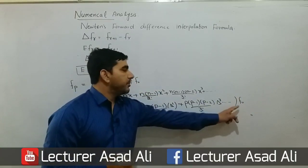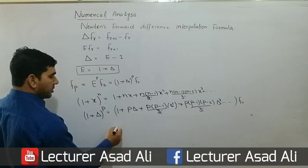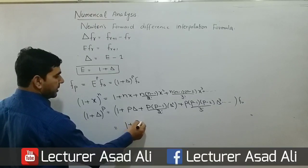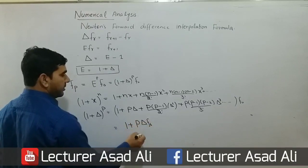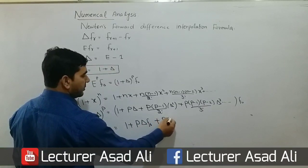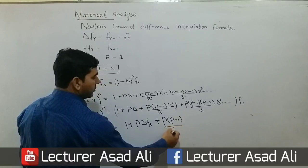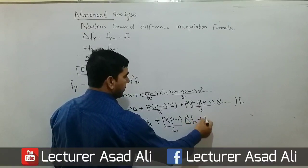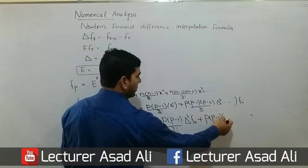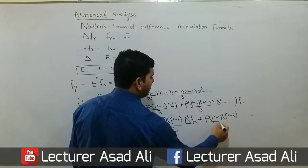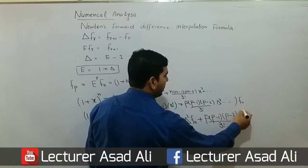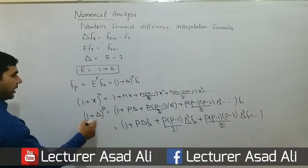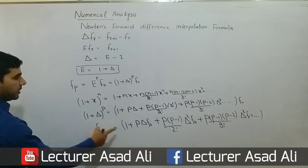Now multiplying F(0) by each and every term, this becomes: f(phi) = F(0) + phi*delta*F(0) + [phi(phi-1)/2!] delta²*F(0) + [phi(phi-1)(phi-2)/3!] delta³*F(0) + ... and so on.